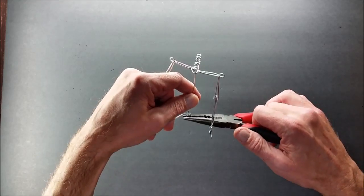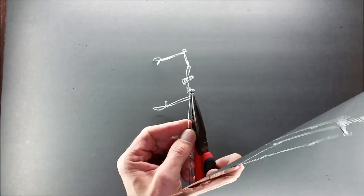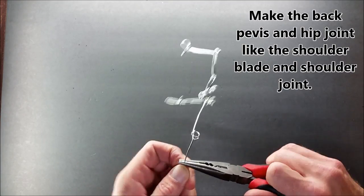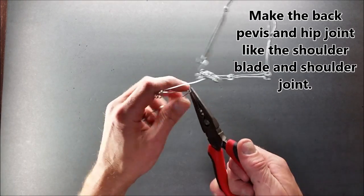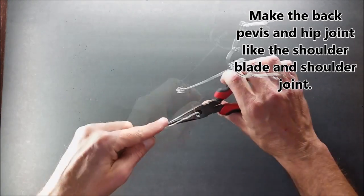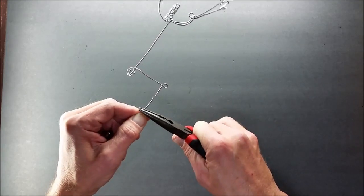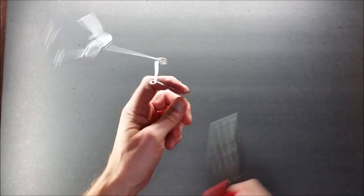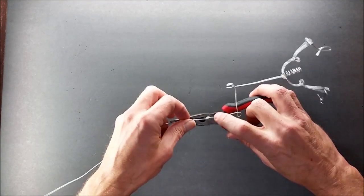So if you'll notice, the elbow loop, the folding part, is the outside of the loop, and the bending part is the loop itself. And that's the same for the knee, and the hips, and the shoulders.